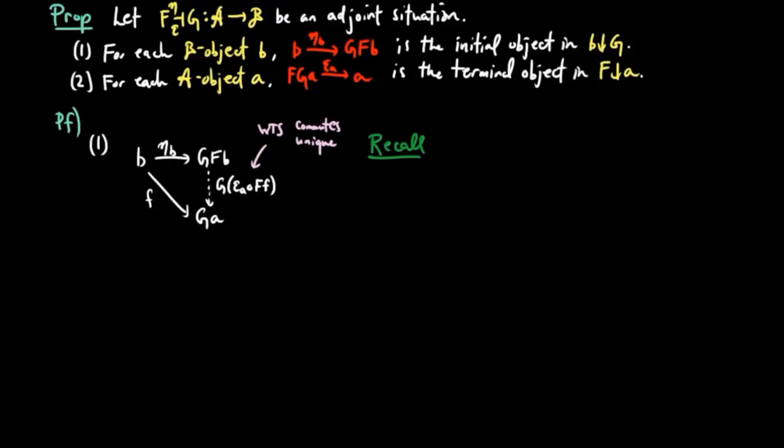Recall that an adjoint situation induces the following isomorphism between Homsets for each pair of objects A and B. It is defined by taking a morphism G to the composition G composed with eta B. Therefore, epsilon A composed with F must be unique.